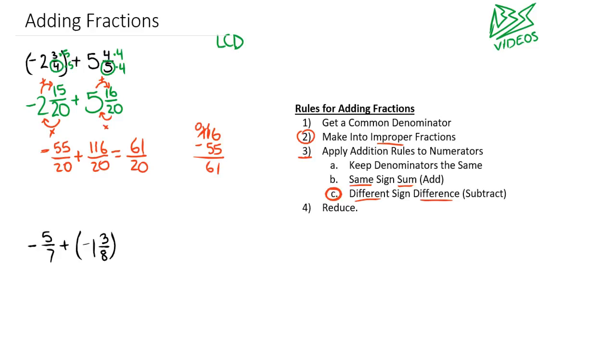I'm okay with leaving this. This is reduced down as much as possible because there are no factors that can go into 61 and 20. Some people like to convert it into a mixed number, which is fine. We could take 61 and divide it by 20. 20 goes into 61 three times with a remainder of 1, so it would be 3 and 1 over 20. Either way is an acceptable solution.